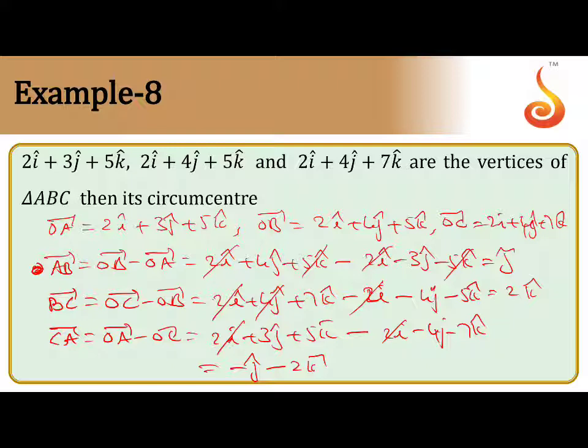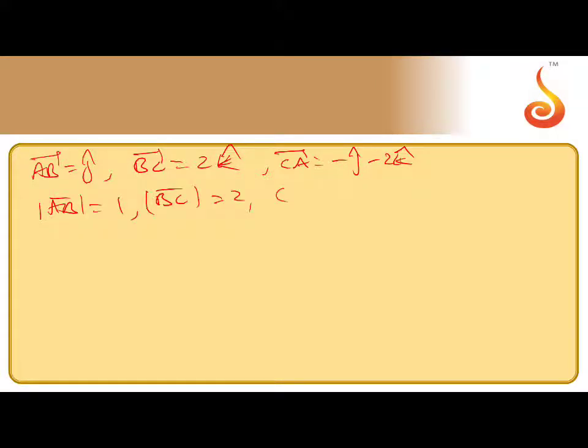So check the magnitudes. So now what you get here: AB is j cap, BC is 2k cap, and CA is minus j minus 2k. So let us take AB magnitude that is 1 and BC magnitude that is 2, CA magnitude root over 1 plus 4 which is root 5.